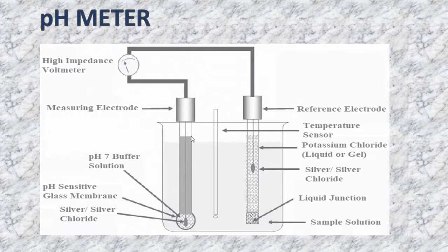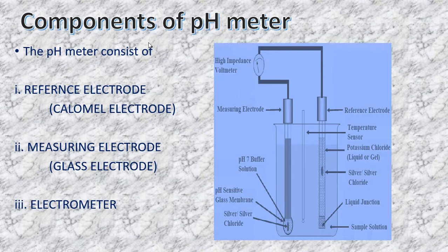Here is a figure of the pH meter. You can see two rods immersed in a solution. One is the measuring electrode and the other is the reference electrode, also called the calomel electrode. The main components of the pH meter are: the reference electrode, the measuring electrode, and the electrometer — which is the reading display.